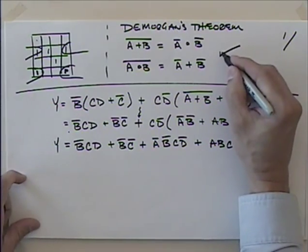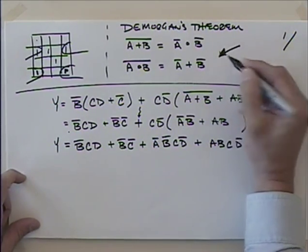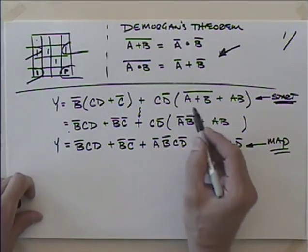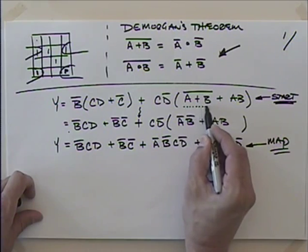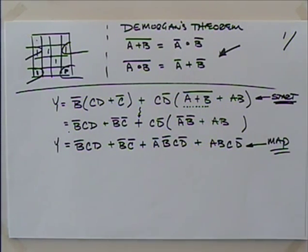I had neglected to show you DeMorgan's theorems when we were talking about Boolean algebra. I put those up there because this term here was definitely something we needed DeMorgan's theorem for. If you want to think about how DeMorgan's theorem works, it's the difference between putting the inverts on the input of a chip versus the output of a chip. It makes a big difference.